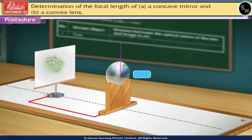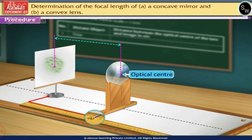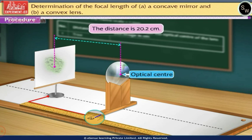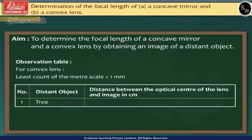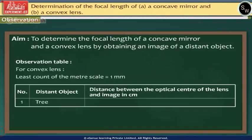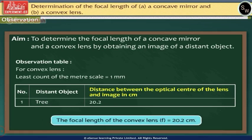Measure the distance between the optical center of the lens and the image on the screen with the help of the meter scale. The distance is 20.2 centimeter. Let us record the value in the observation table. This distance is nothing but the focal length of the convex lens.